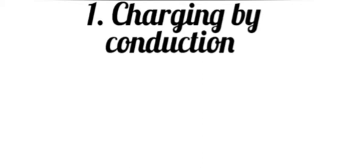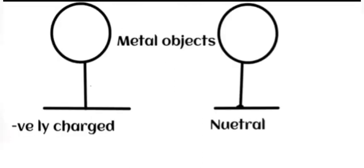To understand charging by conduction, we can perform an activity. Let's assume we have a negatively charged metal object and an uncharged metal object. They are similar objects, each on an insulating stand, so that we can move them around without them interacting with anything else.